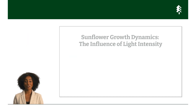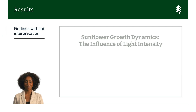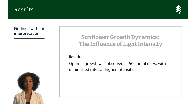Results is straightforward — present your findings without interpretation. For our sunflowers, optimal growth was observed at 500 micromoles per square meter per second, with diminished rates at higher intensities.